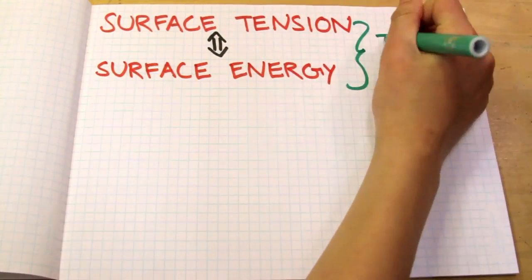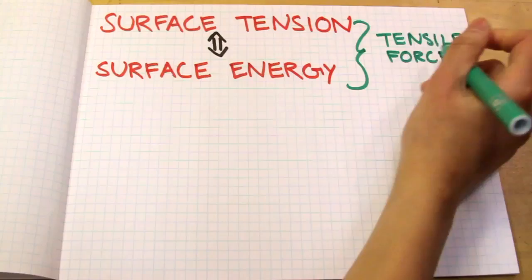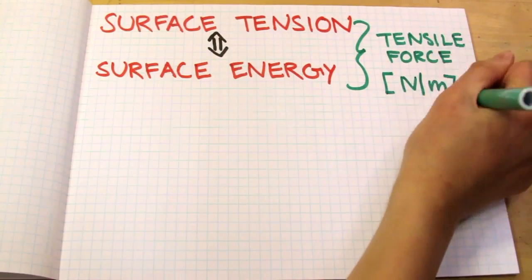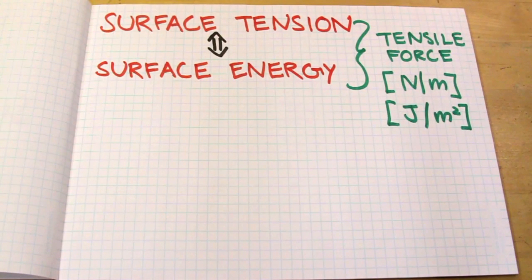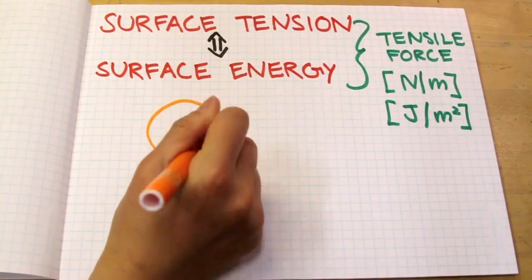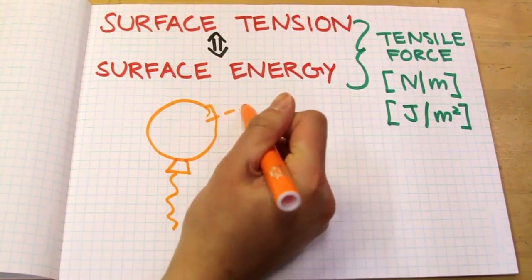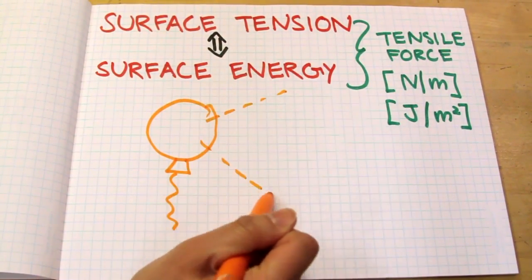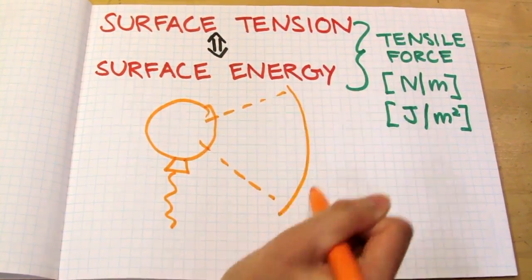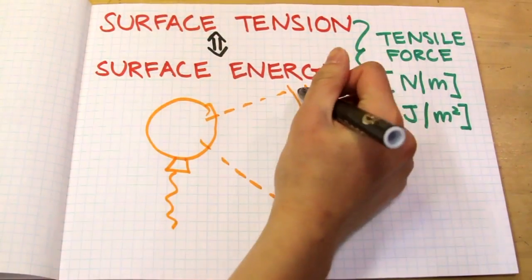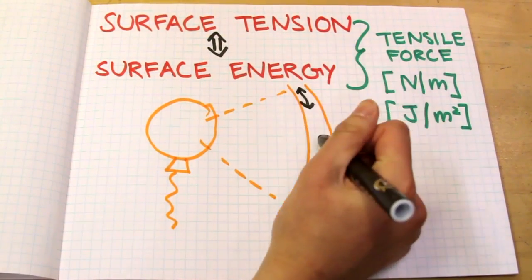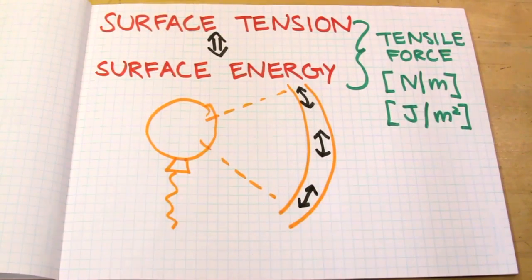Surface tension is given in units of newtons per meter, which is force per unit length, or joules per meter squared, which is energy per unit area. Surface tension acts like a stretched elastic membrane, kind of like a balloon. Because surface tension is a contractile force, each section of the balloon is pulling on each other, resisting changes in shape.